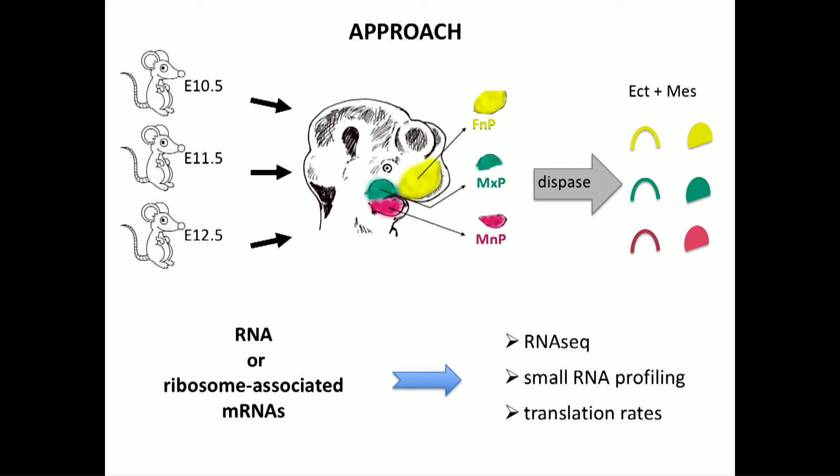The approach that we've taken broadly is to take tissue from three mouse ages, three facial prominences, micro-dissect those out, separate them into the ectodermal and mesenchymal components, then extract RNA, and then use that to generate the data sets that we're looking at.